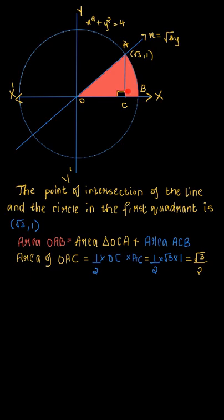The shaded region whose area we need to find is obtained by intersecting the circle and the line. The area of region OBA equals the area of triangle OCA plus the area of region ACB. Here C is the point on the x-axis obtained by drawing a perpendicular from point A down to the x-axis.